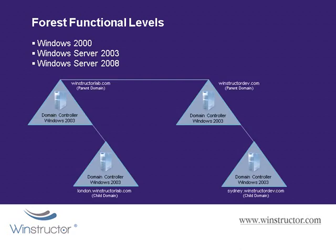If you decided to raise the functional level of your Forest to Windows 2003, then you'll require every single domain controller in the Forest to be Windows 2003. If you have a Windows 2000 domain controller still active in your Forest, you'll be forced to upgrade it to Windows 2003 or Windows 2008 before you'll be able to set the Forest functional level to Windows 2003. So what does setting the Forest functional level to Windows 2000, 2003, or 2008 mean — what's the difference, and why should I bother upgrading my domain controllers just to raise the functional level?